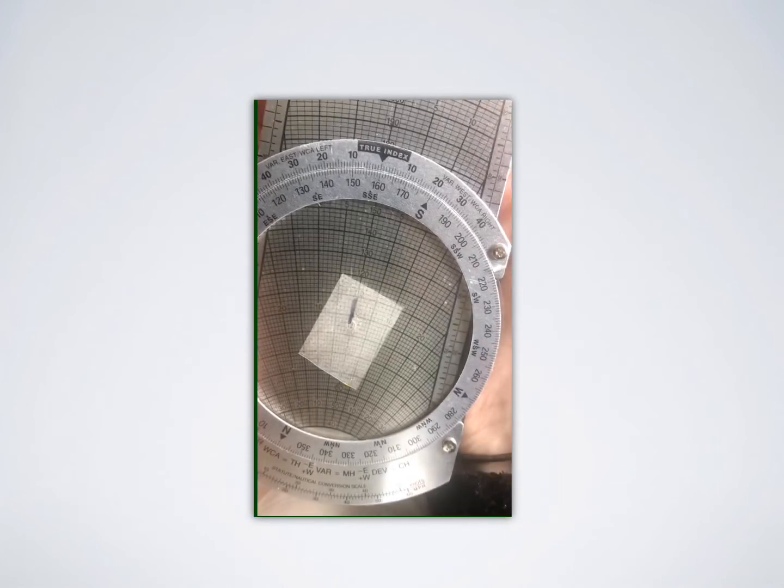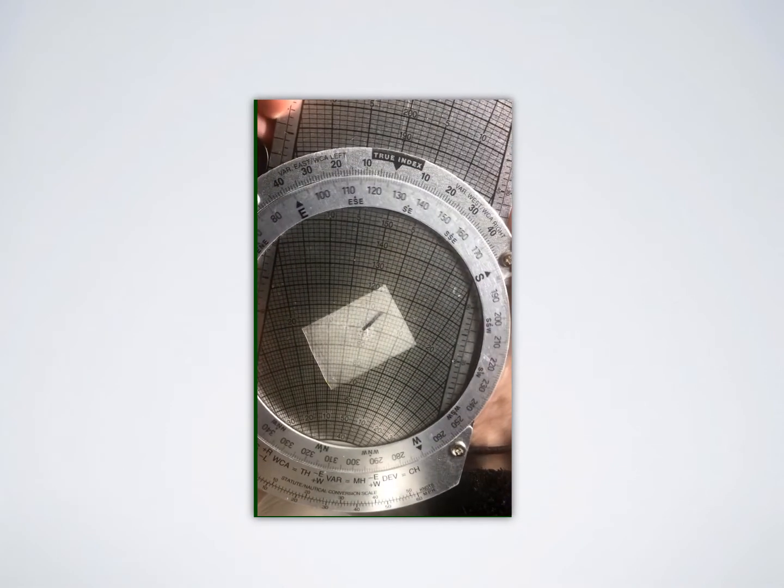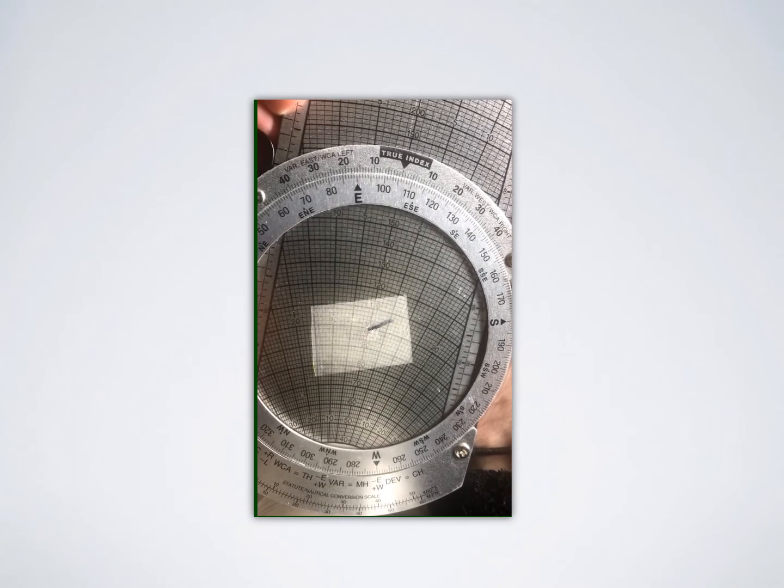Now that you've marked that prevailing wind onto your E6B, you can play around with that and put different headings on top and see how the wind is going to affect your flight.